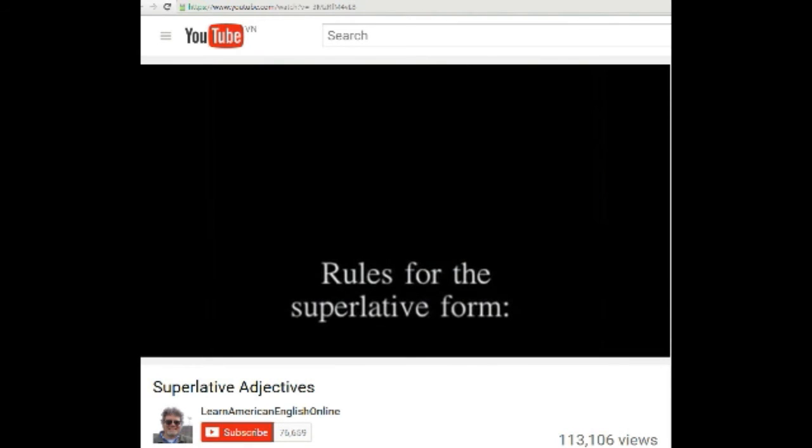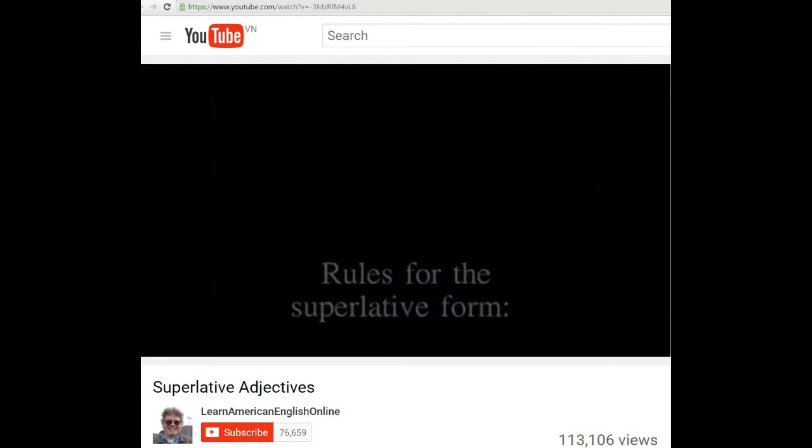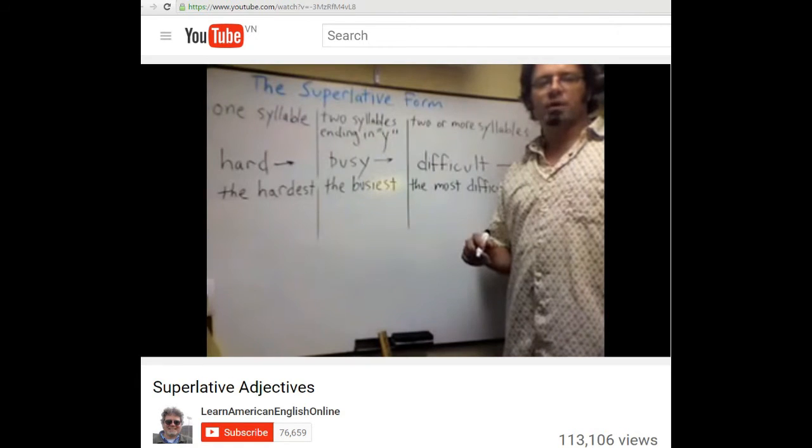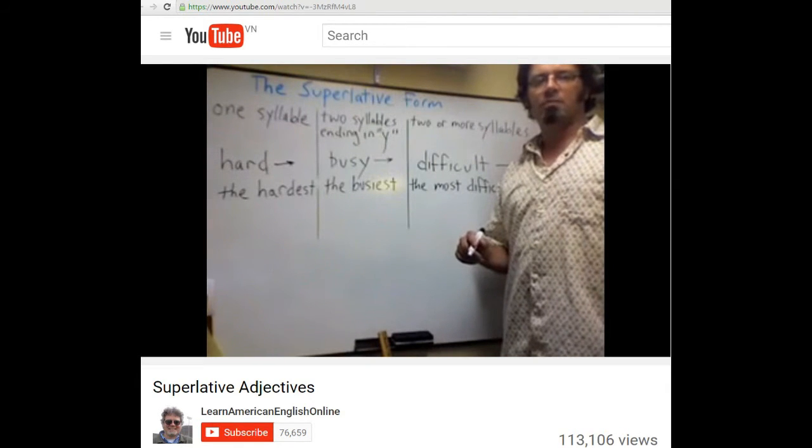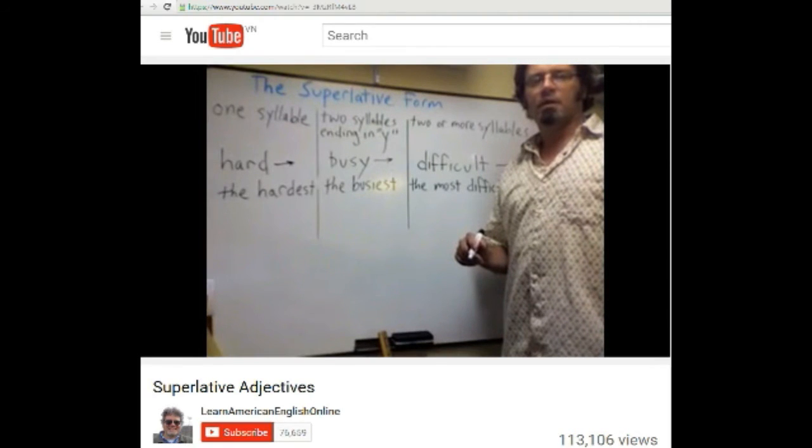Những quy tắc đối với dạng nhất hay là dạng so sánh nhất. There are three different ways to make the superlative form. Có ba cách khác nhau để tạo ra dạng so sánh nhất.